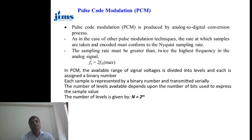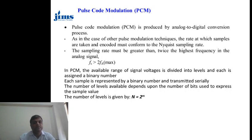In pulse code modulation, it is basically produced by an analog to digital conversion process. It means in PCM we convert an analog signal into a digital signal. As with other pulse modulation techniques, the rate at which samples are taken and encoded must confirm the Nyquist sampling rate — that is, the sampling frequency FS must be greater than twice the maximum frequency in the analog signal.